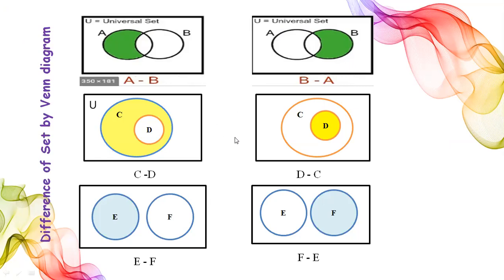For sets where D is a subset of C: if we find C minus D, we shade only C; if we find D minus C, we shade D. For disjoint sets E and F, they are drawn separately. If we find E minus F, we shade E; if we find F difference E, we shade F only.